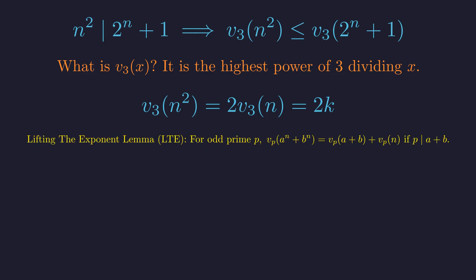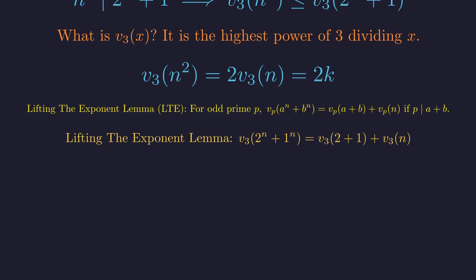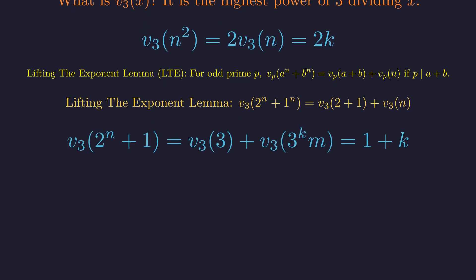Now we use the lifting the exponent lemma, or LTE. This lemma tells us how to count the number of times a prime divides expressions like a to the n plus b to the n when the prime divides a plus b. To find the number of factors on the other side, the lifting the exponent lemma is our perfect tool. It tells us that the number of factors of 3 in 2 to the n plus 1 is exactly 1 plus k.